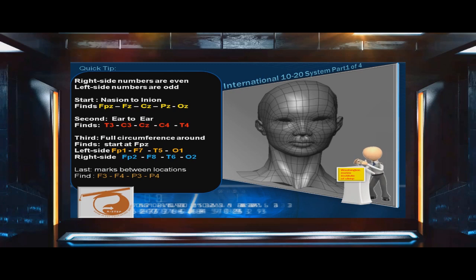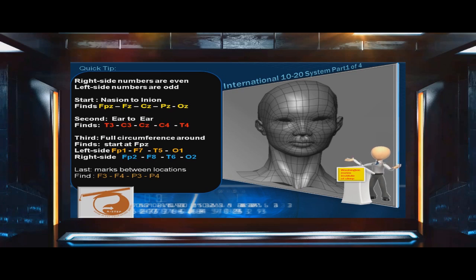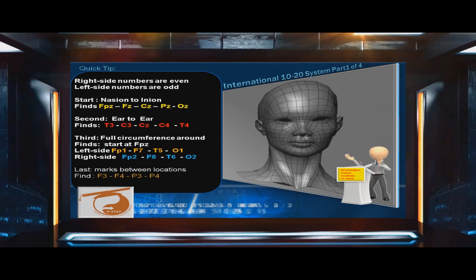Second, measure from ear to ear. This will help you find locations T3, C3, CZ, C4, and T4. Third, measure a full circumference around your patient's head, starting at the FPZ location in the center of the forehead. On the left side, this will help you find landmarks FP1, F7, T5, and O1. On the right side, you'll find locations FP2, F8, T6, and O2.